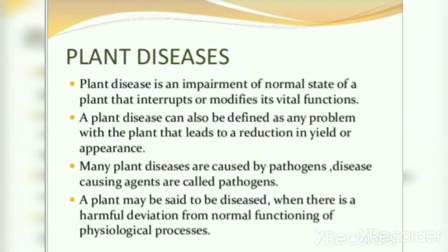When a plant deviates from its normal state, it shows a reduction in yield or appearance. Many plant diseases are caused by pathogens — disease-causing agents are called pathogens. A plant may be said to be diseased when there is a harmful deviation from the normal functioning of physiological processes.